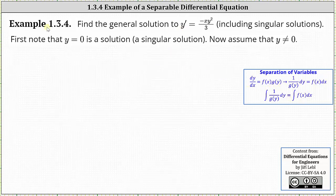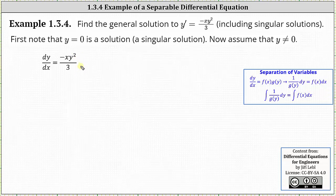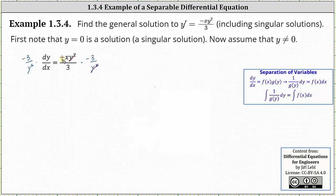To begin, we write y prime as dy/dx. Now we want the y's on the left and the x's on the right. Notice right now we have y squared on the right, so we could multiply both sides of the equation by one divided by y squared. But let's also remove the denominator of three and the negative sign by multiplying both sides of the equation by negative three divided by y squared. Notice on the right, y squared divided by y squared simplifies to one. A negative times a negative is equal to a positive, and we also have three divided by three, which simplifies to one.